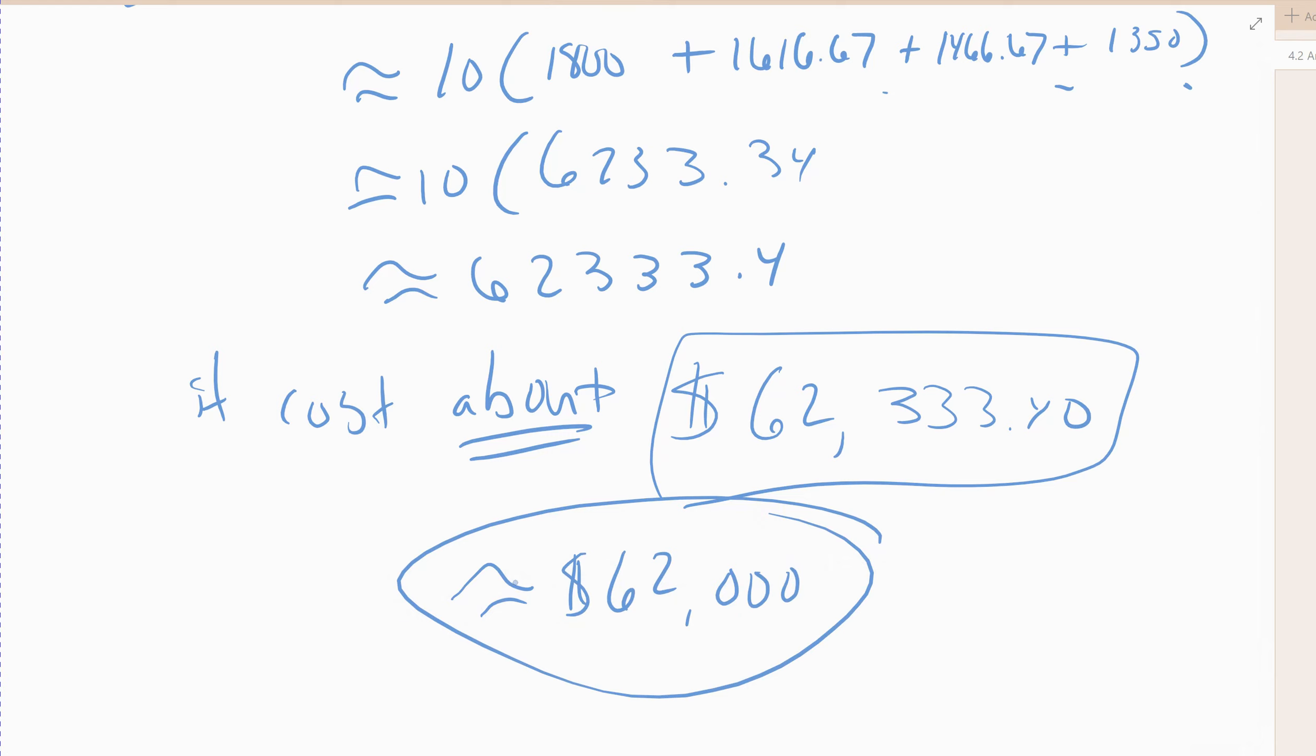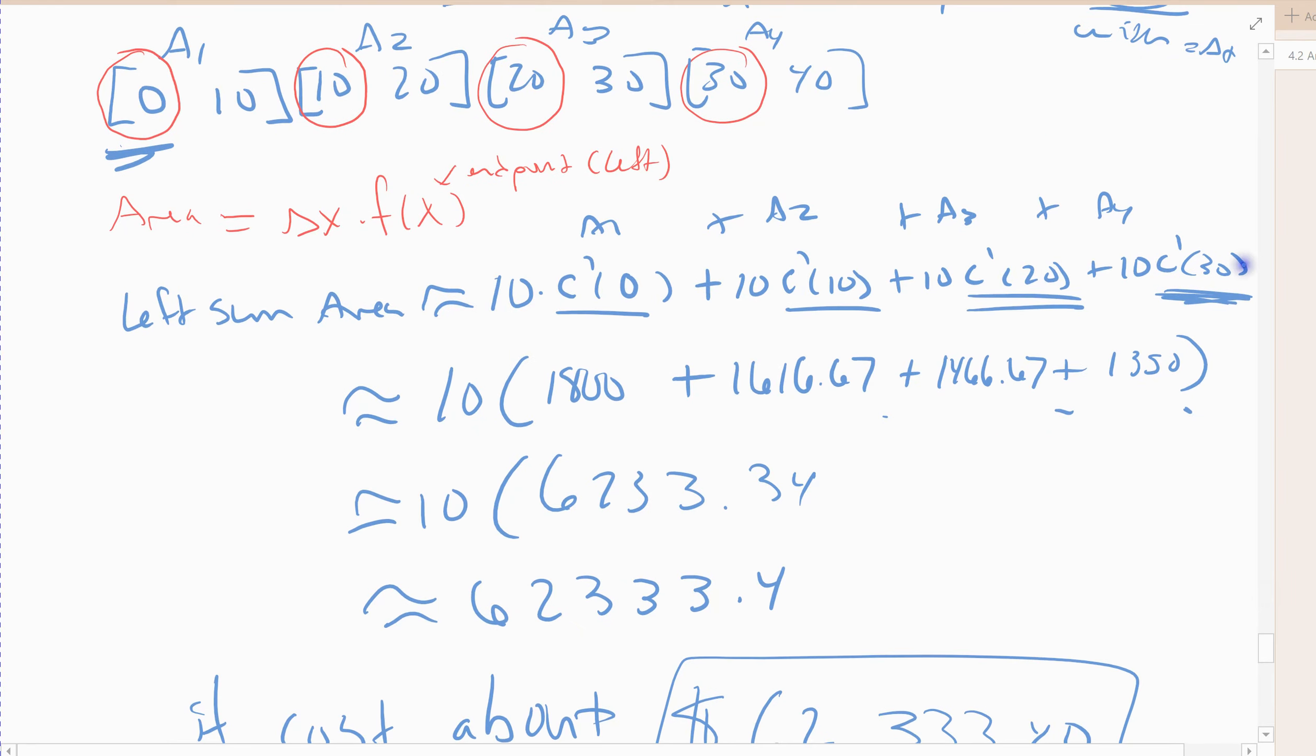The right end points would be very similar to that. You would just interchange this 30 would go 40, 30, 20, and 10. And that would be the only difference. Alright, but we didn't do right end points because the book doesn't do right end points in 4.2. Alright, we will stop there.